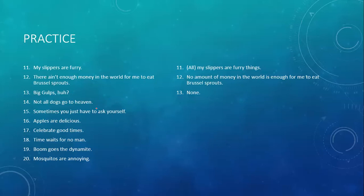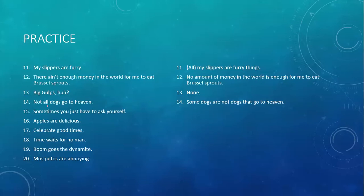Not all dogs go to heaven. This is kind of a tricky one. You see the word 'all' and you see the word 'no,' and it seems like you're saying no dogs go to heaven. But that's not what you're saying. What you're saying is something like: some dogs are not dogs that go to heaven. So some A is not B — this is a type O proposition. Take note that 'not all' means 'some are not.' Whenever you see a 'not all,' that's a type O.